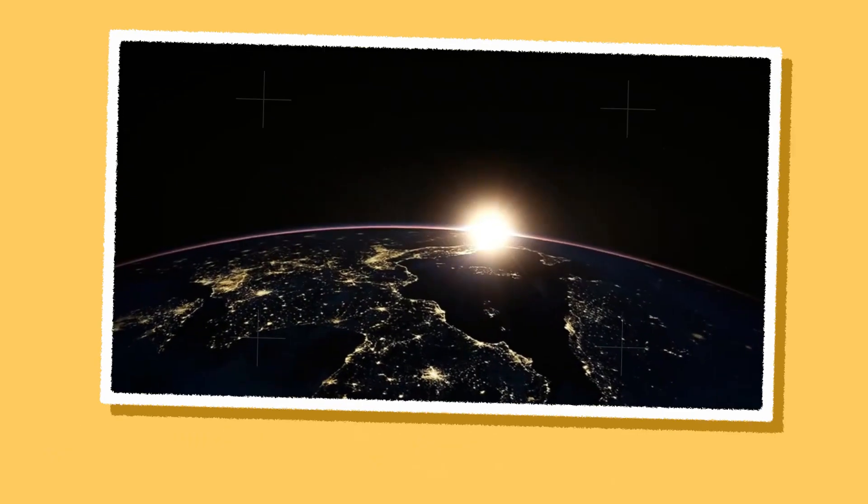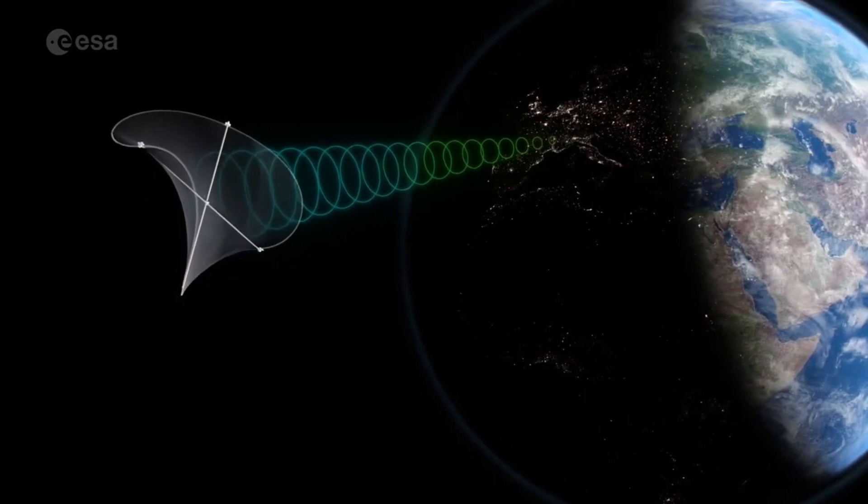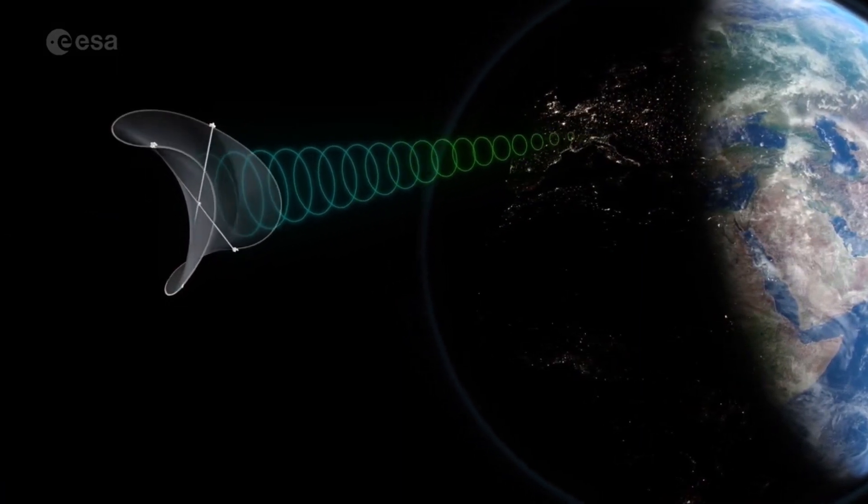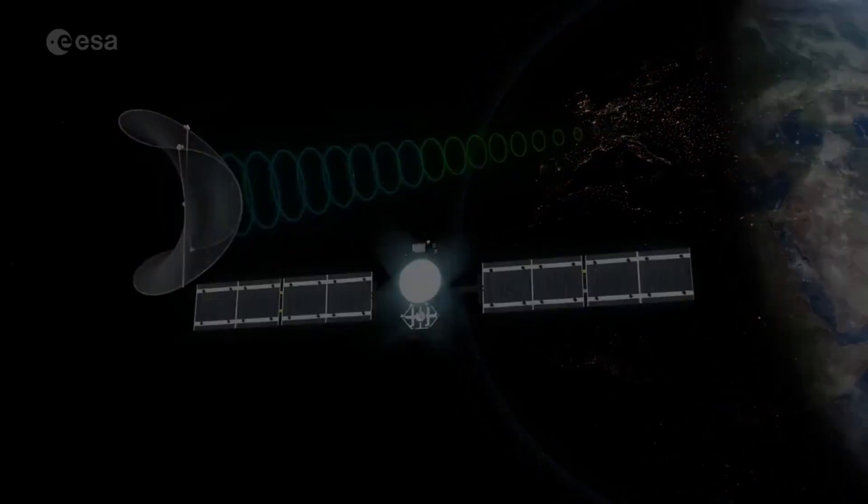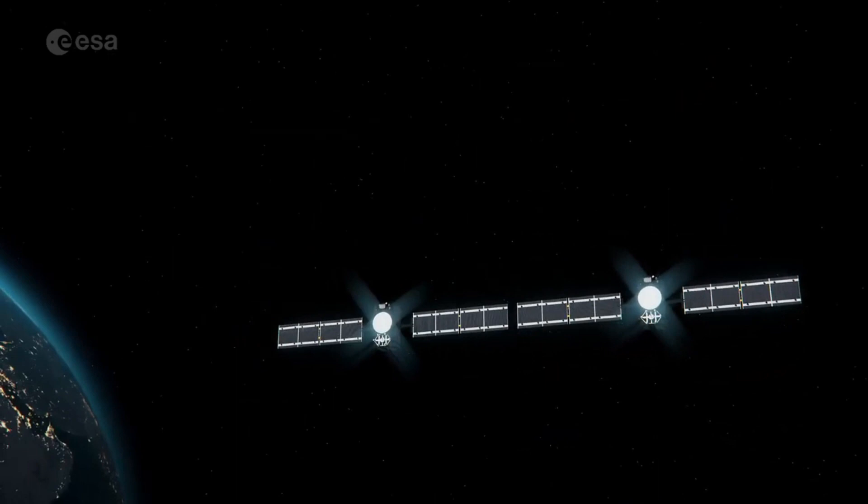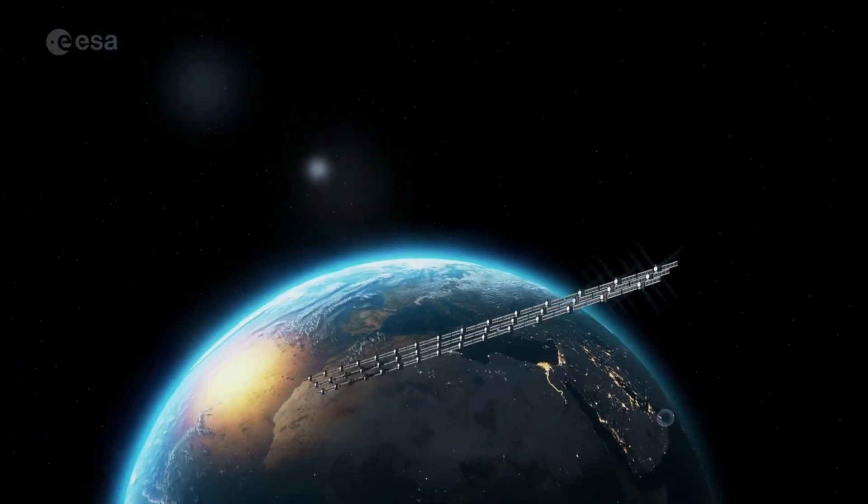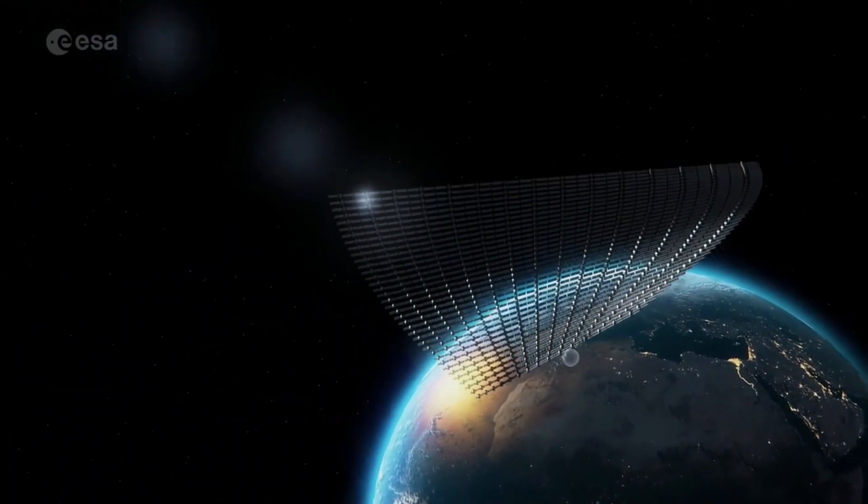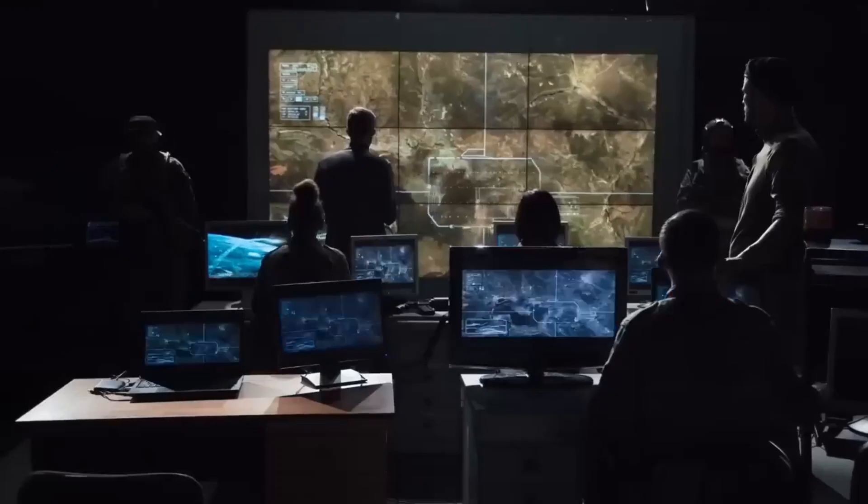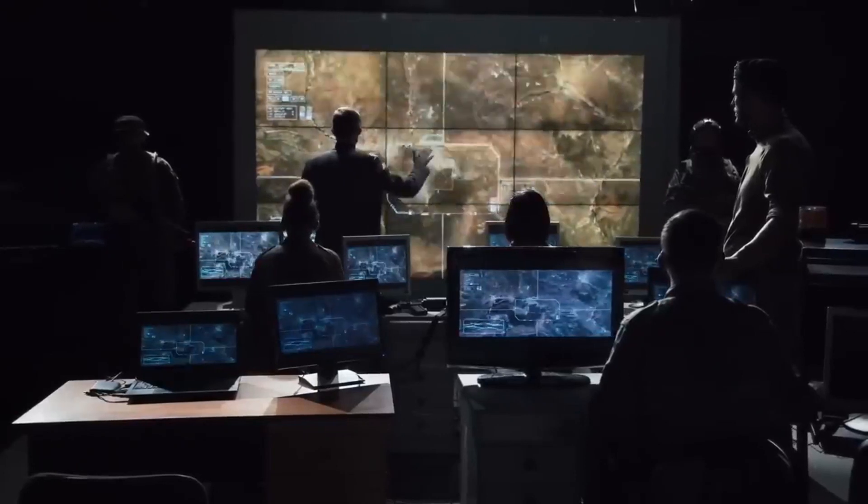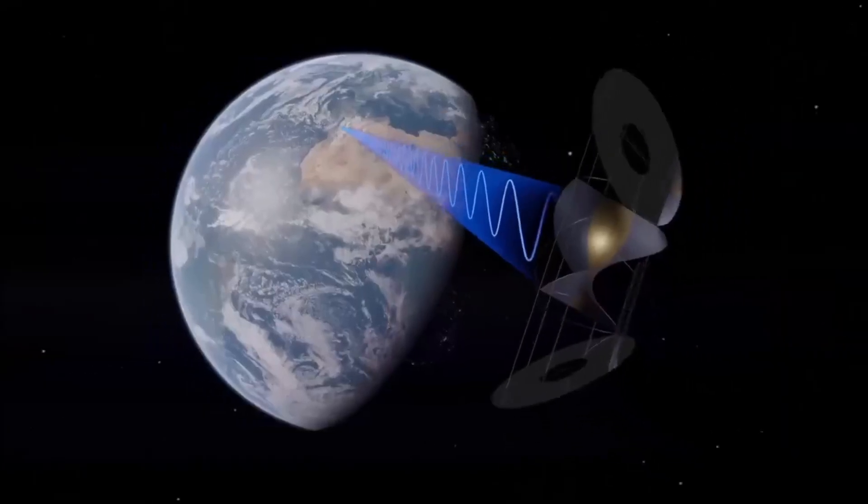Space-based solar power (SBSP) is the concept of collecting solar power in outer space with solar power satellites (SPS) and distributing it to Earth. The idea is to construct enormous orbital arrays of solar panels, then beam the power to Earth via microwaves. Space is an ideal place for a solar panel. With the right orbit, the sun is always shining. Plus, without an atmosphere absorbing and scattering the solar radiation, the sunlight is brighter and the photovoltaic cells gather more energy. In theory, SBSP can provide non-intermittent clean energy at a scale similar to nuclear power.